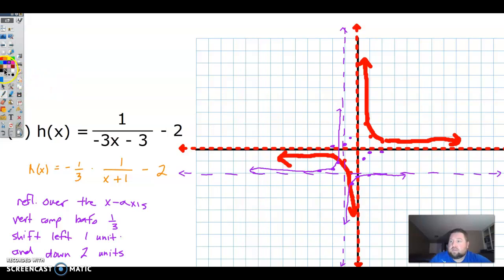Last thing to talk about here is going to be domain and range. So remember, always based on the asymptotes. Domain goes from left to right. So the only spot that we don't have an x value is at x cannot equal negative one. Bottom to top for the range. And the only y value we don't have is y cannot equal negative two.